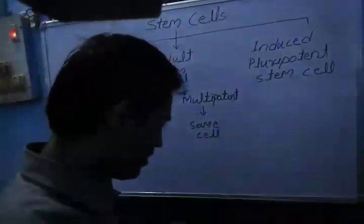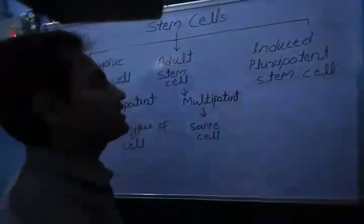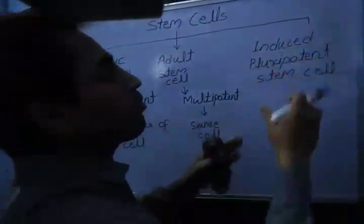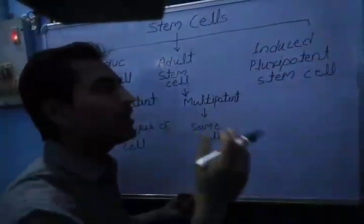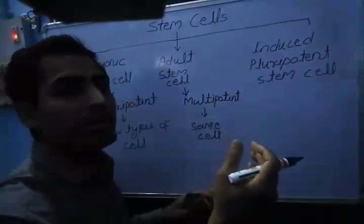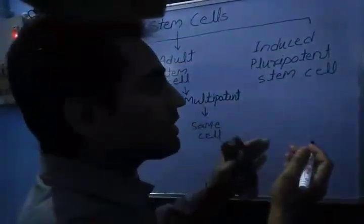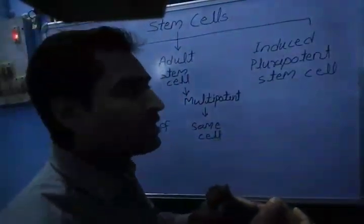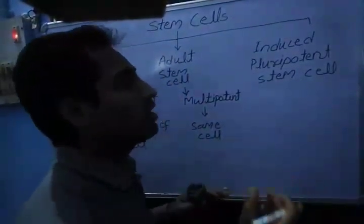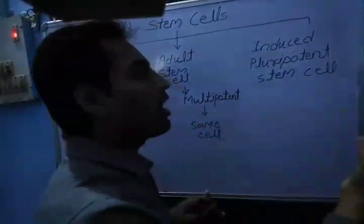Come to the next, that is induced pluripotent stem cells. Induced pluripotent cells are made in the laboratory by using normal body cells. For example, blood cells are collected or used, then reprogrammed to form stem cells.